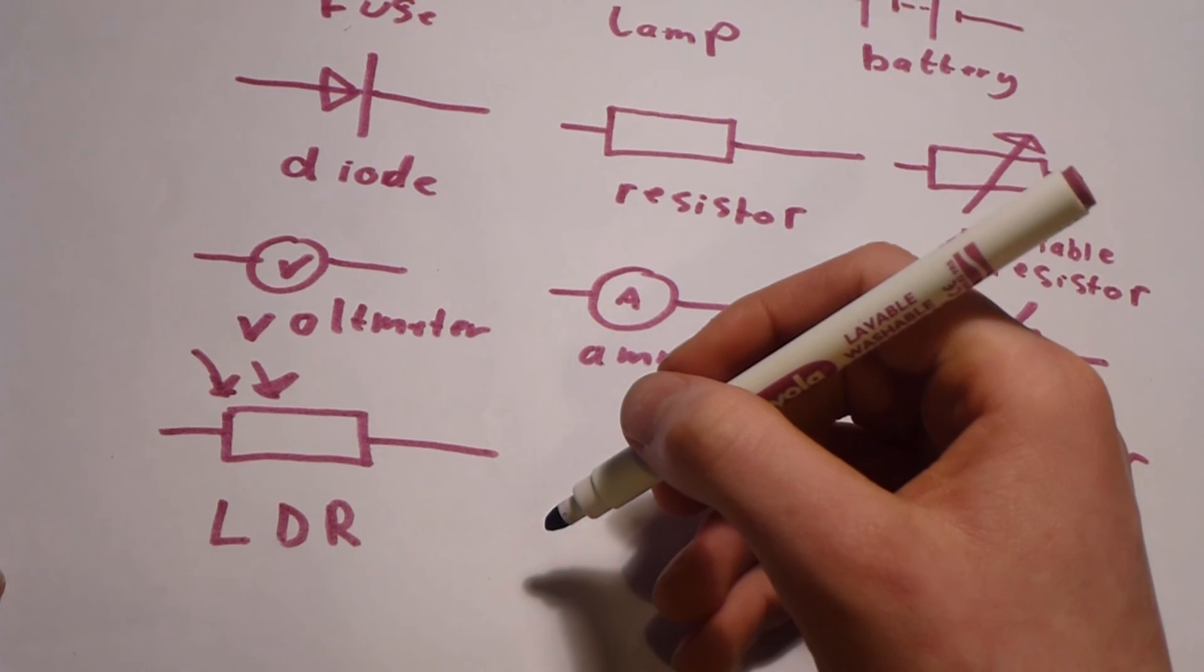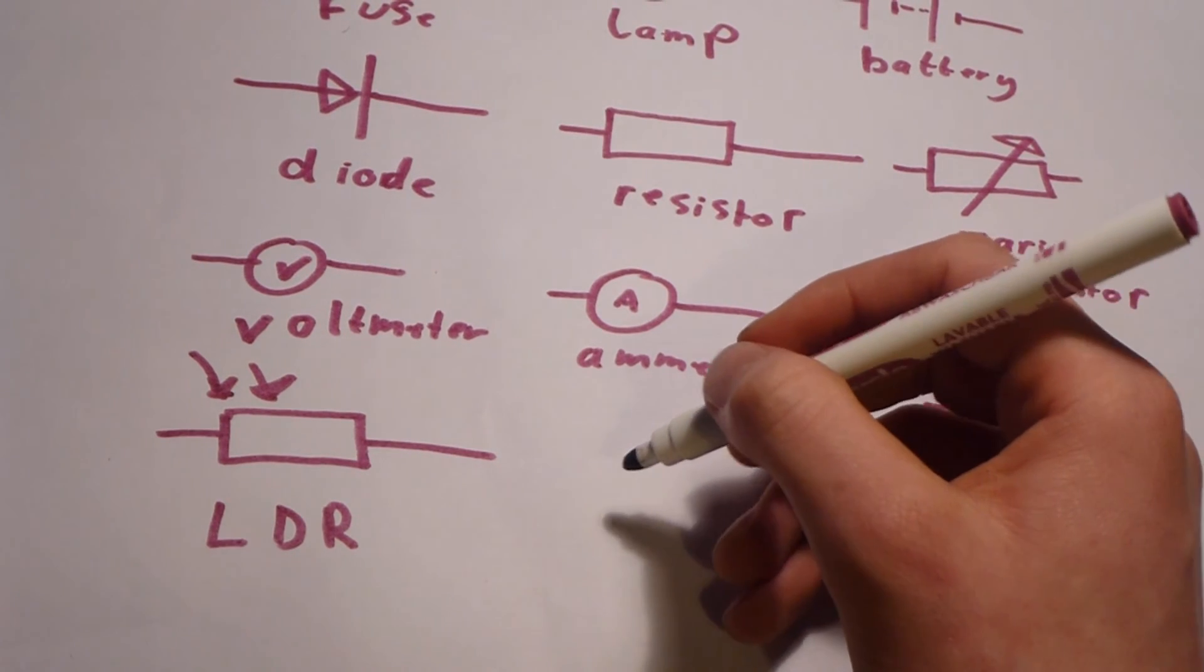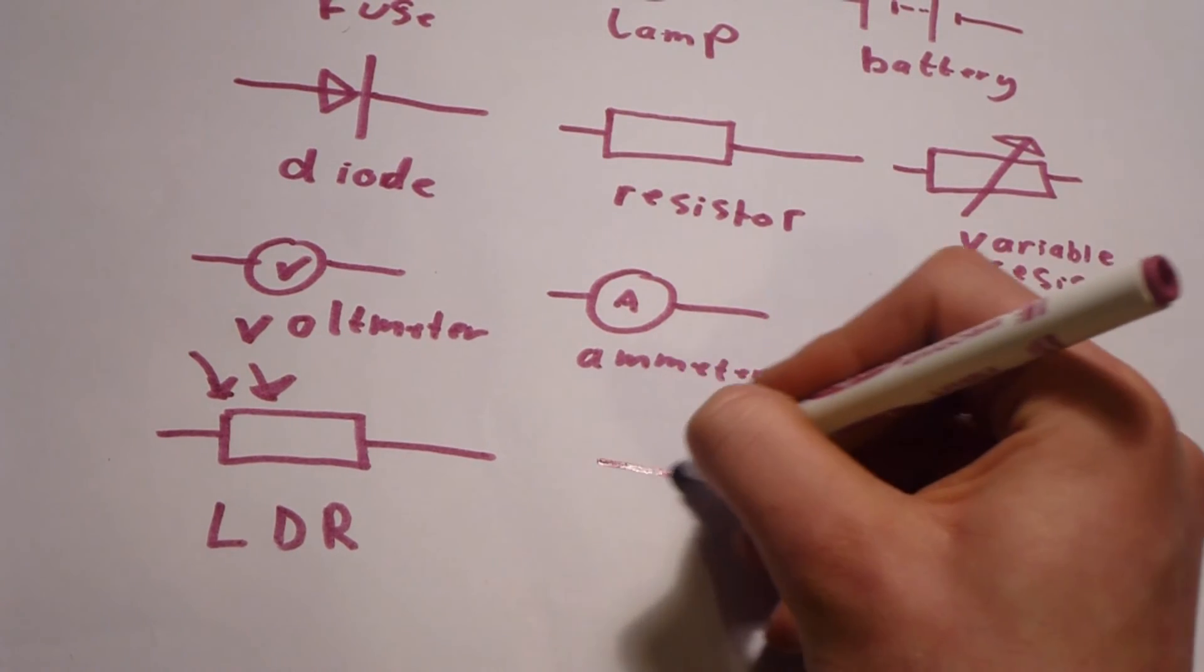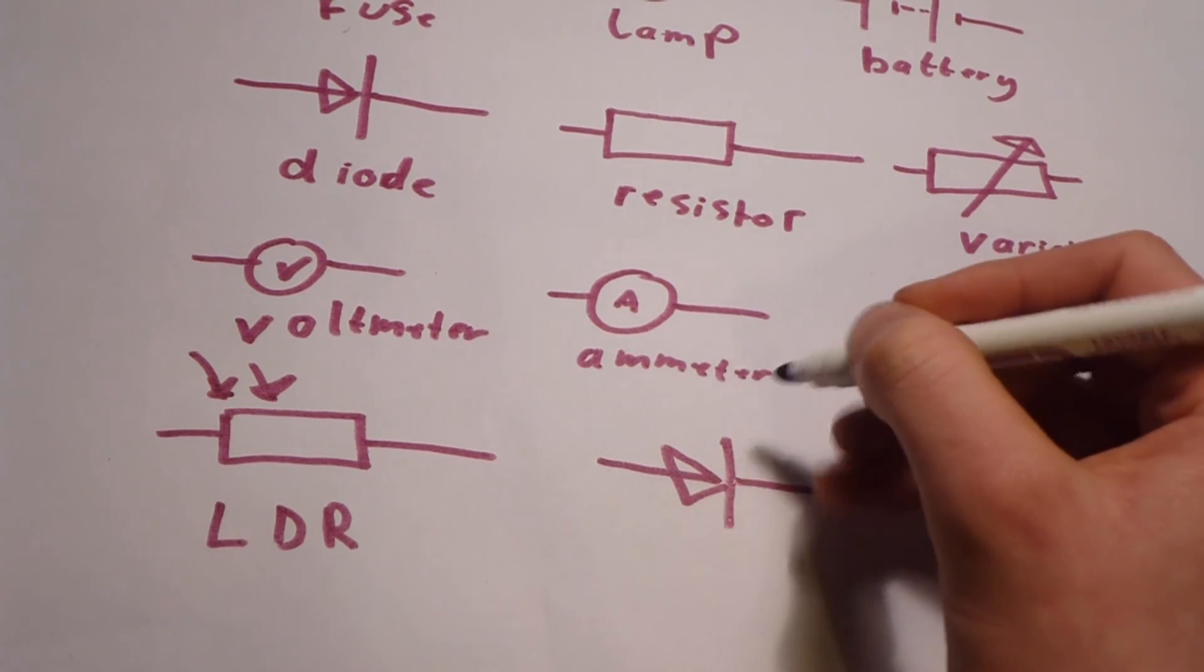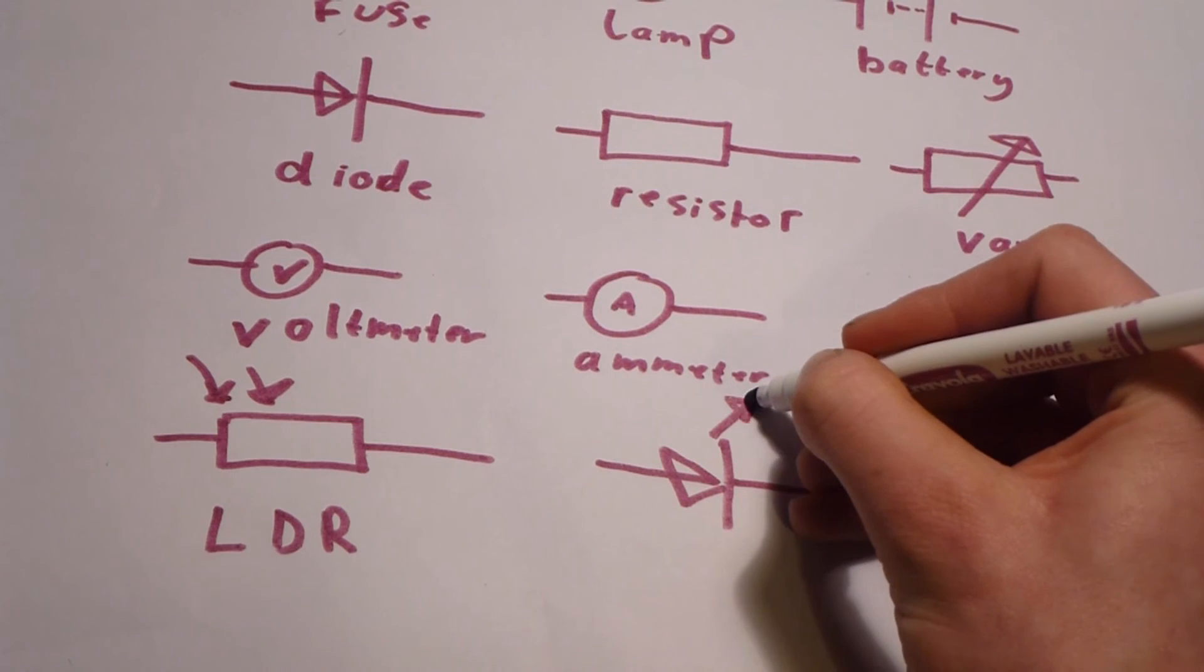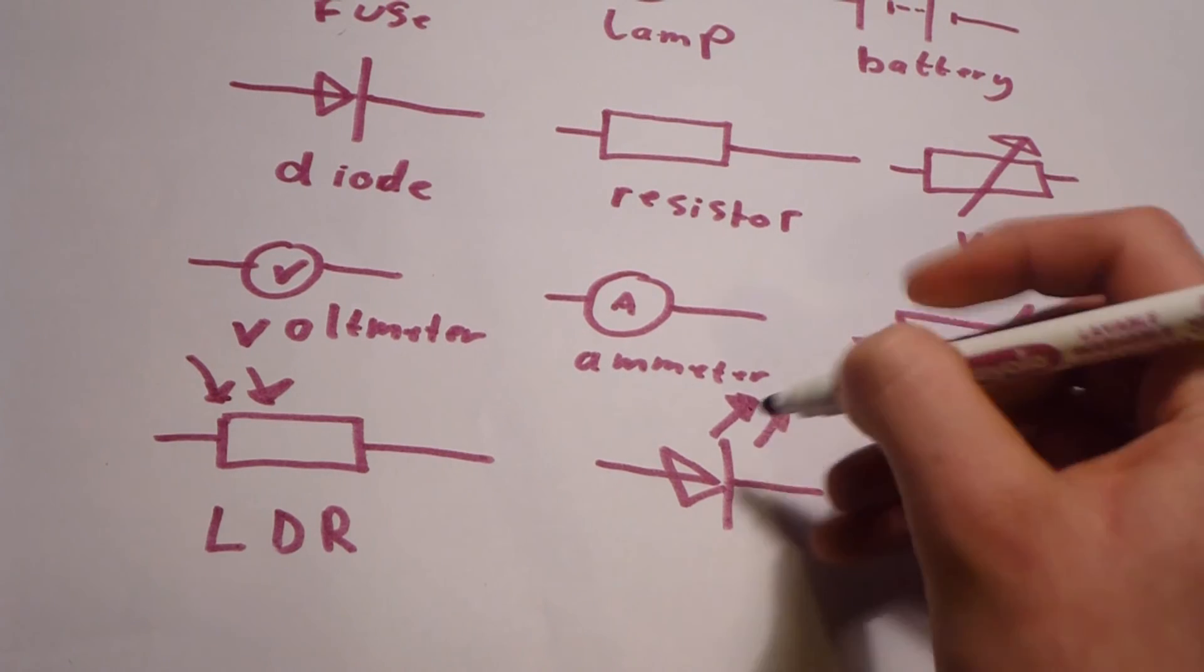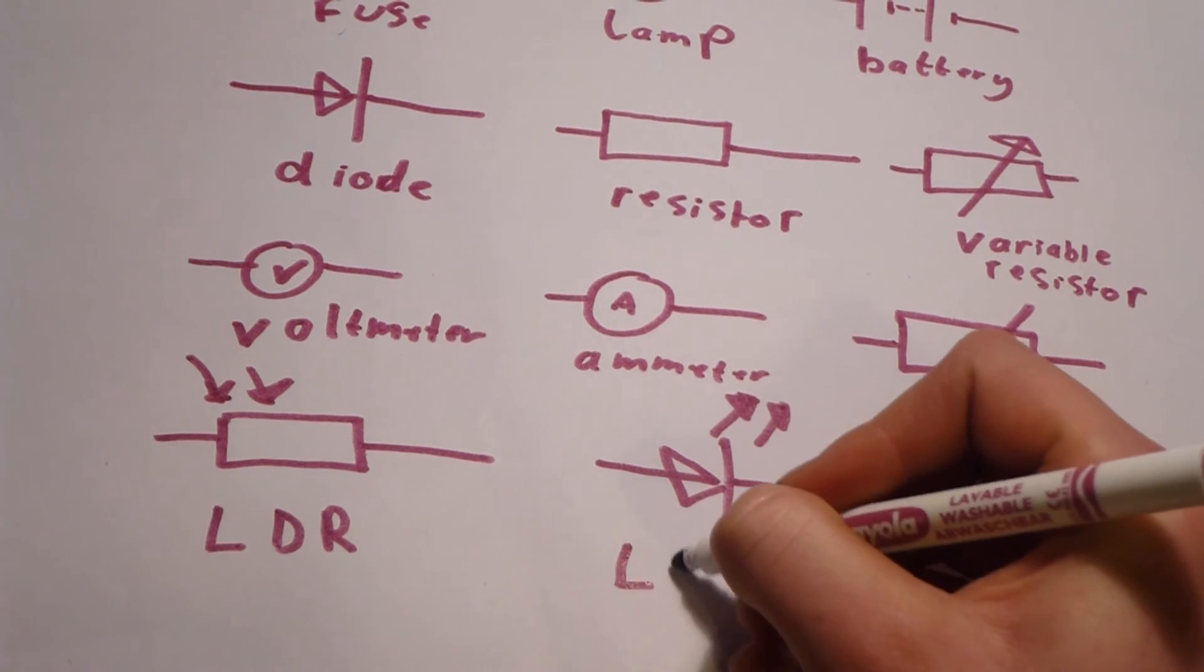After that, we have a LED, which is a light emitting diode. So it's the same as a diode that only lets the current flow in one direction, but it has some arrows coming out as it emits light. That is written as an LED.